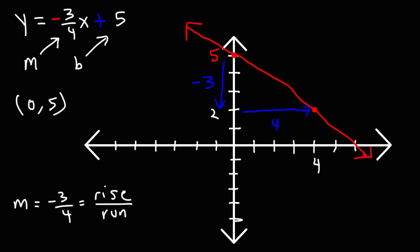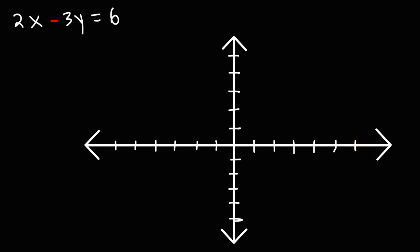That's how you can graph a linear equation in slope-intercept form. Now, how can we graph the linear equation 2x minus 3y equals 6? This is not in slope-intercept form — it's in standard form, that is, ax plus by equals c format.